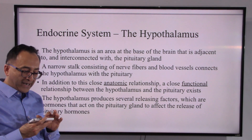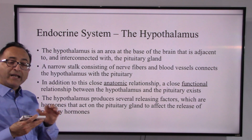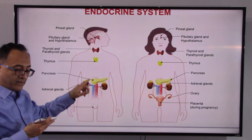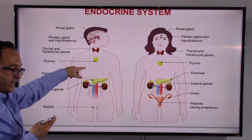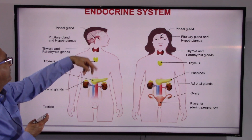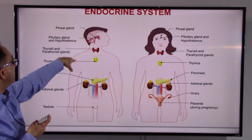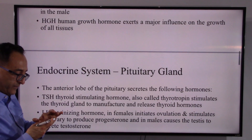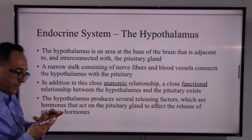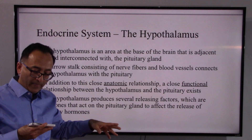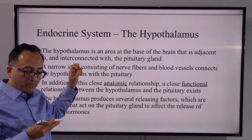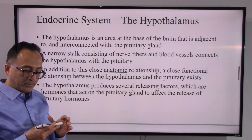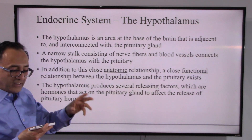The pituitary and hypothalamus are located right next to each other in our brain. The hypothalamus is actually the one who starts the process — it works with the pituitary gland to do a variety of things.